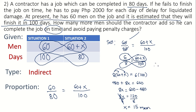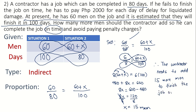Therefore, the contractor needs to add 15 more men to finish the job on time. To finish the job in 80 days, he needs 60 plus 15, which is 75 men total working on the construction.